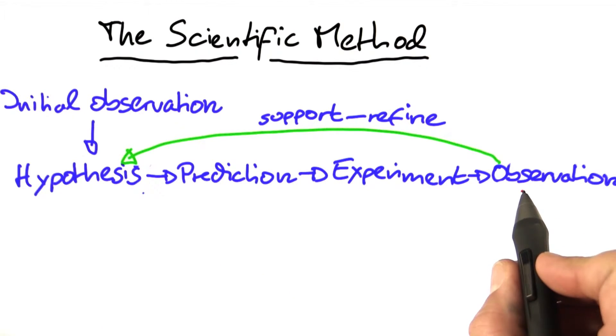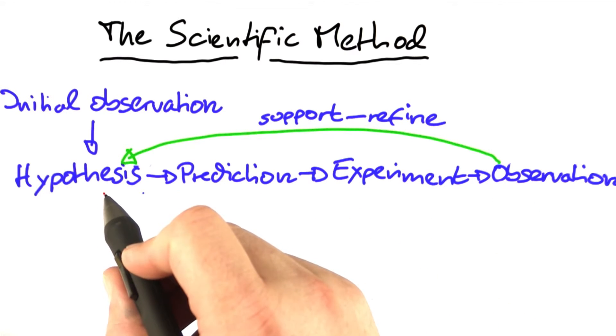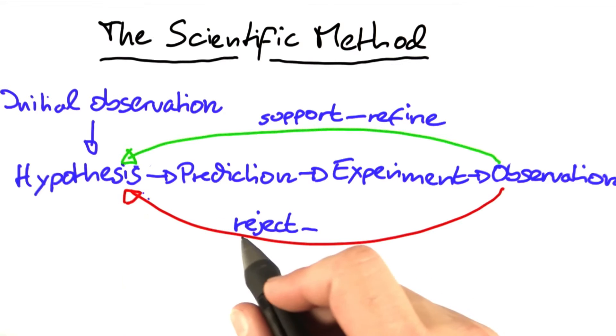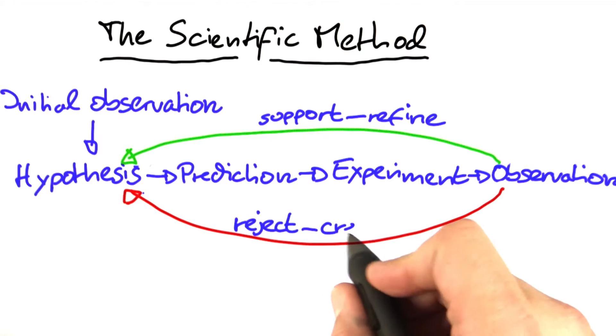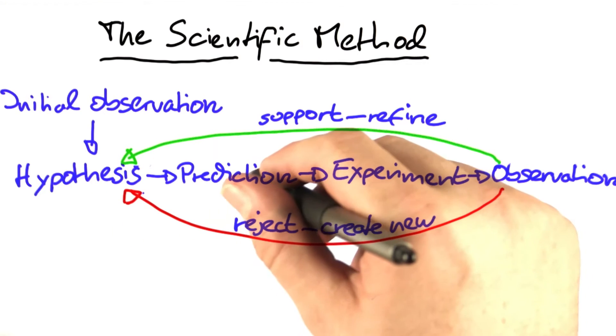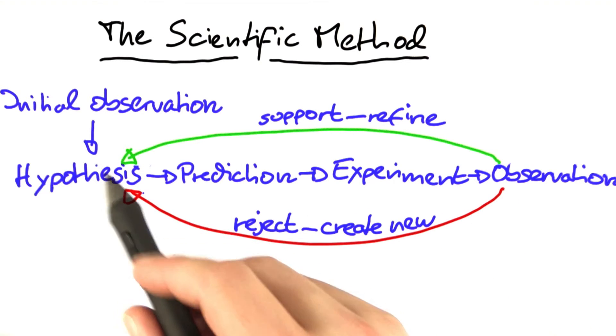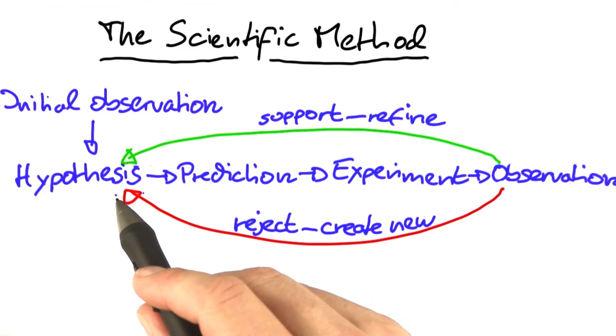If the observation, however, is not in line with your prediction, then the hypothesis is rejected. And if the hypothesis is rejected, you need to come up with a new hypothesis. And this cycle—going from hypothesis through prediction, through experiment, through observation, and gradually refining the hypothesis or coming up with alternatives—this is something you repeat again and again until your hypothesis becomes consistent with all observations and has so much predictive power that it becomes what one calls a theory.